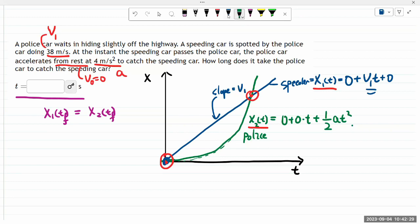It says, so V1 times T final. I'm just copying it over from here. That's going to be equal to this expression. One half acceleration of the police car times T final squared. Just copying it from here. So, oh, wow, really simple algebra.